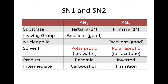In the SN1 reaction, a polar protic solvent is preferred because it can stabilize the ions of the intermediate. While a polar aprotic solvent is preferred for SN2 reaction, since a polar protic solvent will stabilize the nucleophile, which is a disadvantage for SN2. Examples of polar protic solvents are water and ethanol, and an example of a polar aprotic solvent is acetone.